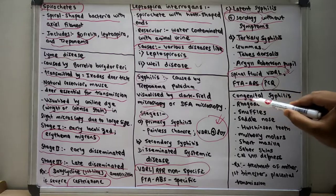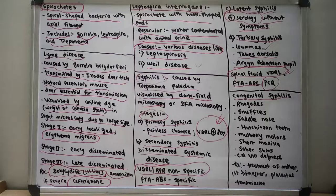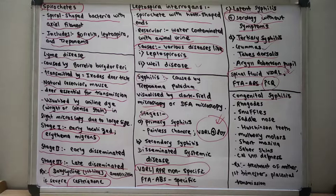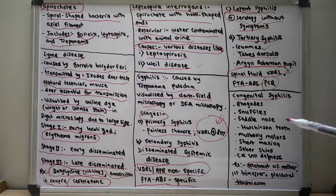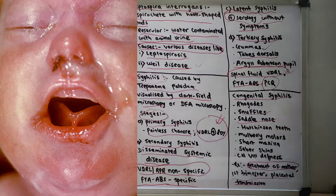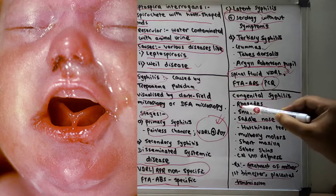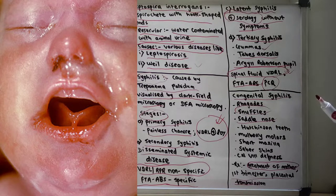Congenital syphilis is an important topic. There is transplacental transmission of syphilis, which can occur in the first trimester. Treatment of the mother should be done promptly after confirmation of diagnosis. Features of congenital syphilis include rhinitis (snuffles) — with a specific nasal discharge as shown in the picture — saddle nose deformity, and rash.